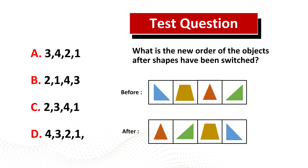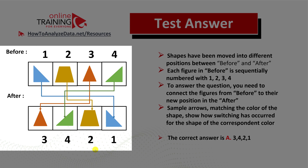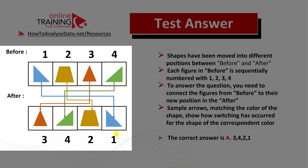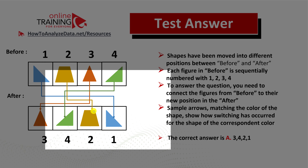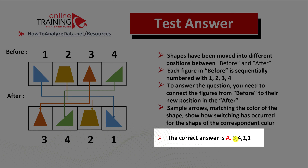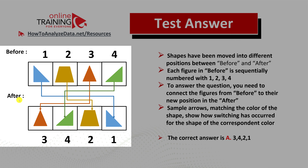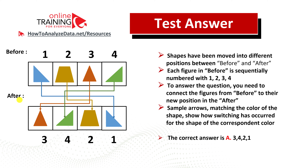To determine the new positions of the objects, mentally move each object from its original position to the new position. For example, the blue triangle flows from position one to position four, so spot four in the answer holds the number 1. The green triangle moves from position four to position two, so spot two in the answer holds the number 4. You can trace all objects this way to determine new positions. The correct answer is choice A: 3 4 2 1.